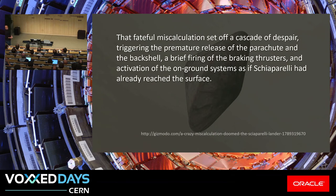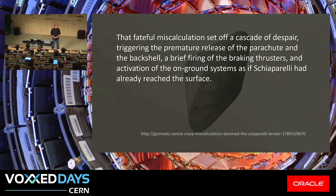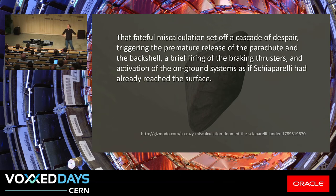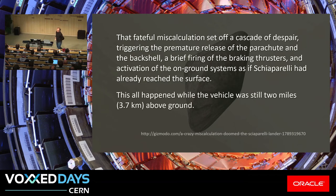This fateful miscalculation — and if you're looking for vocabulary to use at work — set off a cascade of despair. Triggering the premature release of the parachute. The craft is going: 'Oh crap, I'm underground and I'm still fully dressed.' Off the parachute, the back shell, everything, fire retros. But it's nearly 4 kilometers above the ground. Mars's gravity is a bit lower than Earth's, but 3,700 meters is still 3,700 meters. And indeed the landing site was visible from orbit — there was a nice little crater.